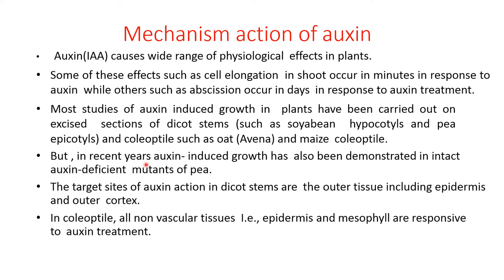In recent years, auxin-induced growth has also been demonstrated in intact auxin-deficient mutants. The target site of auxin action in dicot stem is the outer tissue including epidermis and outer cortex. In coleoptile, all non-vascular tissue — that is, epidermis and mesophyll — are responsive to auxin treatment.